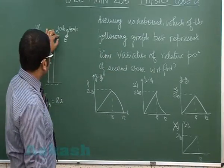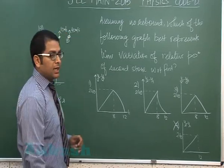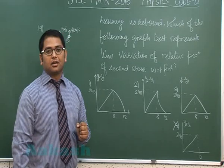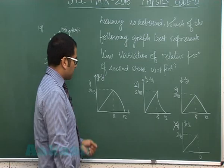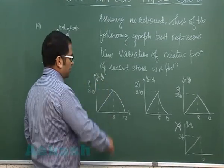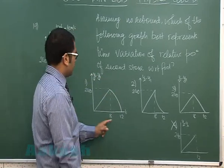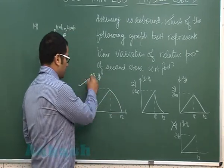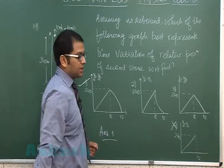After that, when A comes to ground, the speed of B keeps on increasing, meaning the relative speed would also increase. You can see option number 1 fits because the slope of the relative position gives the relative speed, and the slope continuously increases in the first graph. So option number 1 would be correct. Question 19 has correct option as answer 1.